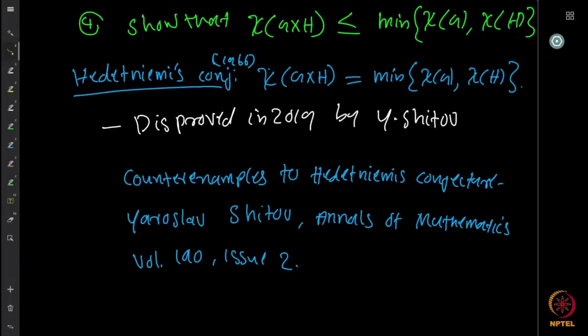The fourth question is to show that the chromatic number of the direct product is at most the minimum of the chromatic numbers of G and H. In the Cartesian product we showed it equals the maximum; here it is at most the minimum of χ(G) and χ(H).